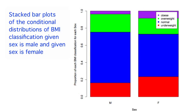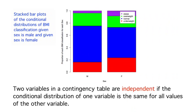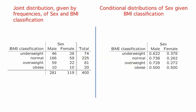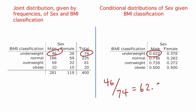We say the two variables in a contingency table are independent if the conditional distribution of one variable is the same for all values of the other variable. Since the distributions of BMI classification seem to differ between males and females, it appears that BMI classification and sex are not independent for these skeletons. We can also look at the conditional distributions of sex given BMI classification — these are the row percentages — where each row sums to one. For example, 62.2% of the underweight skeletons are male.